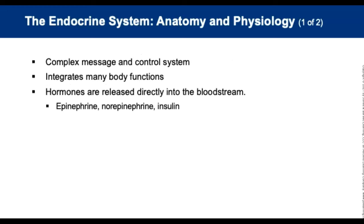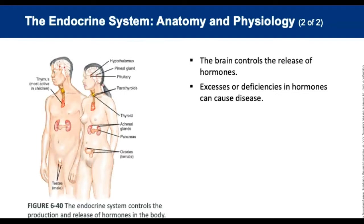The endocrine system is a complex message and control system that integrates many body functions. Endocrine glands release hormones directly into the bloodstream, and each gland produces one or more hormones with a specific effect on an organ, tissue, or process. The brain controls the release of hormones through a feedback loop to keep the body in balance. Excessive or deficient hormones can cause disease processes such as diabetes.